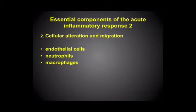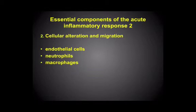Now let's think about the cellular alterations and migration of these cells. The players in this component are the endothelial cells themselves, the neutrophils - the polymorph neutrophils. And within the same family as neutrophils, we have macrophages. Neutrophils and macrophages both have this property of phagocytosing - that is, ingesting debris and material into lysosomes and then trying to neutralise that material. But the macrophage is the big brother, as the name implies: big eater.